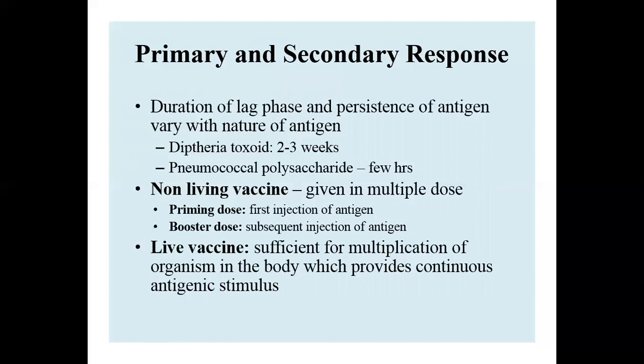Multiple doses involve injection of antigens. The first injection of antigen is known as the primary dose, and subsequent antigen injections are known as booster doses. Vaccination can also be carried out with living vaccines, where multiplication of the organism in the body provides continuous antigenic stimulus.